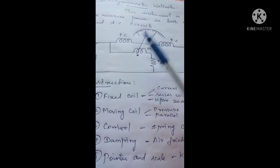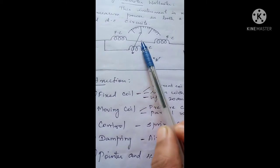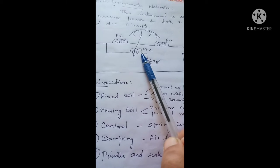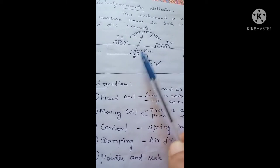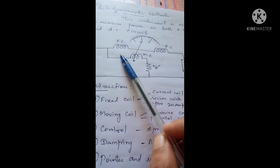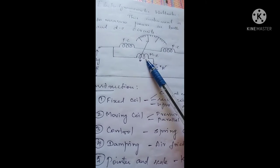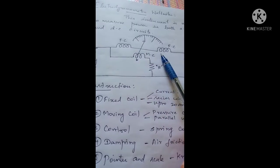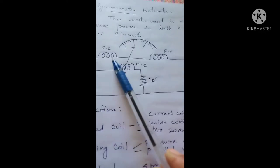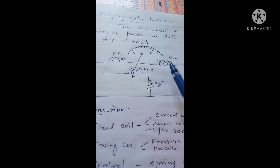This is the moving coil arrangement. Both the fixed coil and the moving coil are made of copper coils. The moving coil arrangement is placed in between the fixed coil arrangement. The fixed coil is divided into two equal halves and the moving coil is placed in between these two fixed coils.